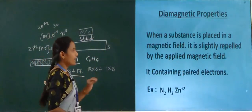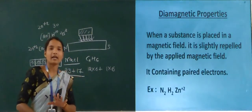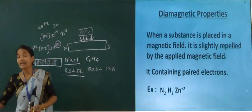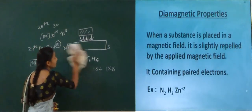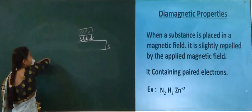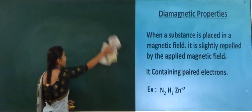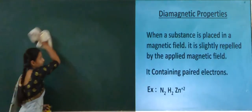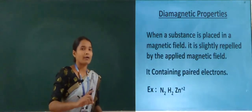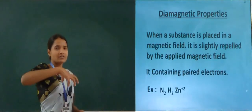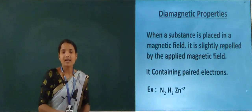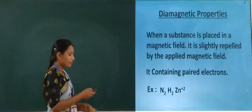To summarize: 'dia' means two — diamagnetic substances have paired electrons. 'Para' is opposite to diamagnetic — paramagnetic substances have unpaired electrons. Diamagnetic depends on paired electrons; paramagnetic depends on unpaired electrons.